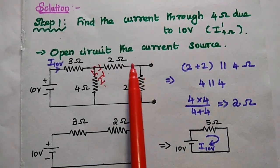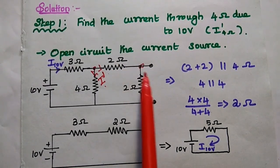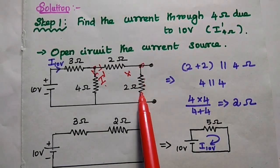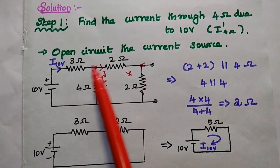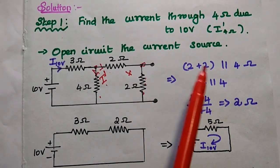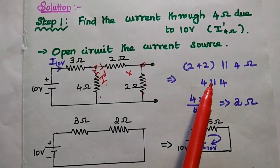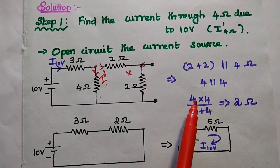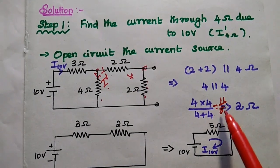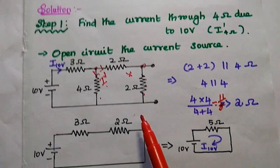Here, these two resistors are in series — only one end is connected. So 2 ohm and 2 ohm are in series, and this series combination is in parallel with the 4 ohm. So this path can be written as (2 + 2) in parallel with 4 ohm. Simplifying: 2 + 2 = 4, and 4 in parallel with 4 ohm gives 4×4 / (4+4) = 16/8 = 2 ohm. So this entire resistance value can be replaced with 2 ohm.